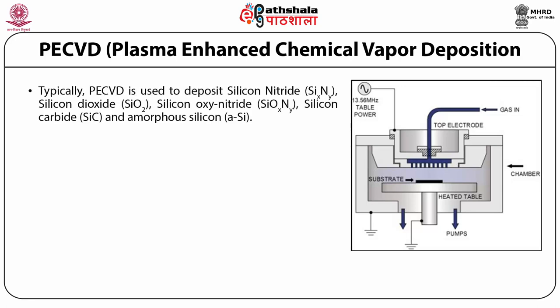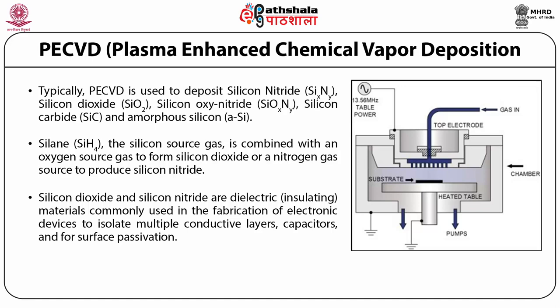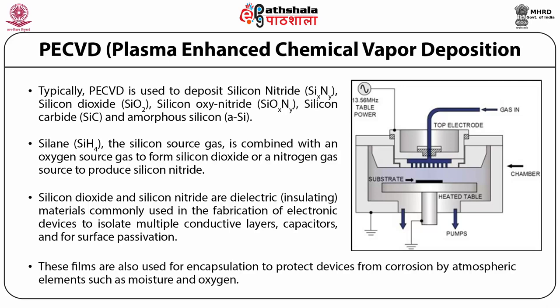Typically, PECVD is used to deposit silicon nitride, silicon dioxide, silicon oxynitride, silicon carbide, and amorphous silicon. Silane is combined with an oxygen source gas to form silicon dioxide, or a nitrogen gas source to produce silicon nitride. Silicon dioxide and silicon nitride are dielectric or insulating materials commonly used in the fabrication of electronic devices to isolate multiple conductive layers, capacitors, and for surface passivation. These films are also used for encapsulation to protect devices from corrosion by atmospheric elements such as moisture and oxygen.